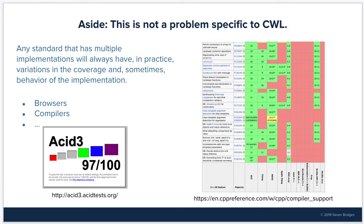This is not a problem specific to CWL. Any standard that has multiple implementations will always have in practice variations in the coverage and sometimes behavior of the implementation. For example, there are many browsers and for this reason we have something called an ACID test that allows us to test how much of the HTML specification a given browser interprets correctly. Compilers similarly have different coverages — a table from the C++ specification website lists coverage of different compilers for different C++ features, and as you can see, not all compilers support all C++ features.